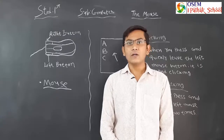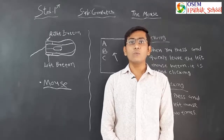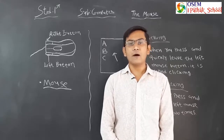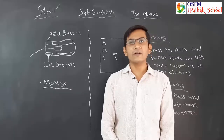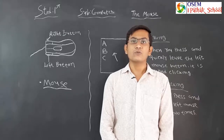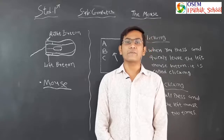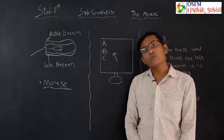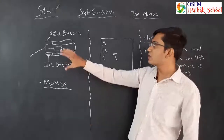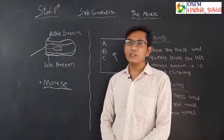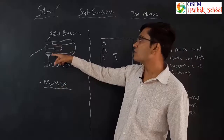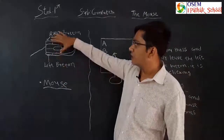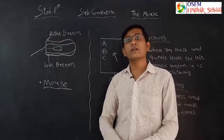Today we will learn more about one of the computer parts — that is the mouse. With the help of the mouse, we can perform different tasks in the computer. The mouse is a small plastic device with one or two buttons: the left mouse button, right mouse button, and a scroll button in the middle.